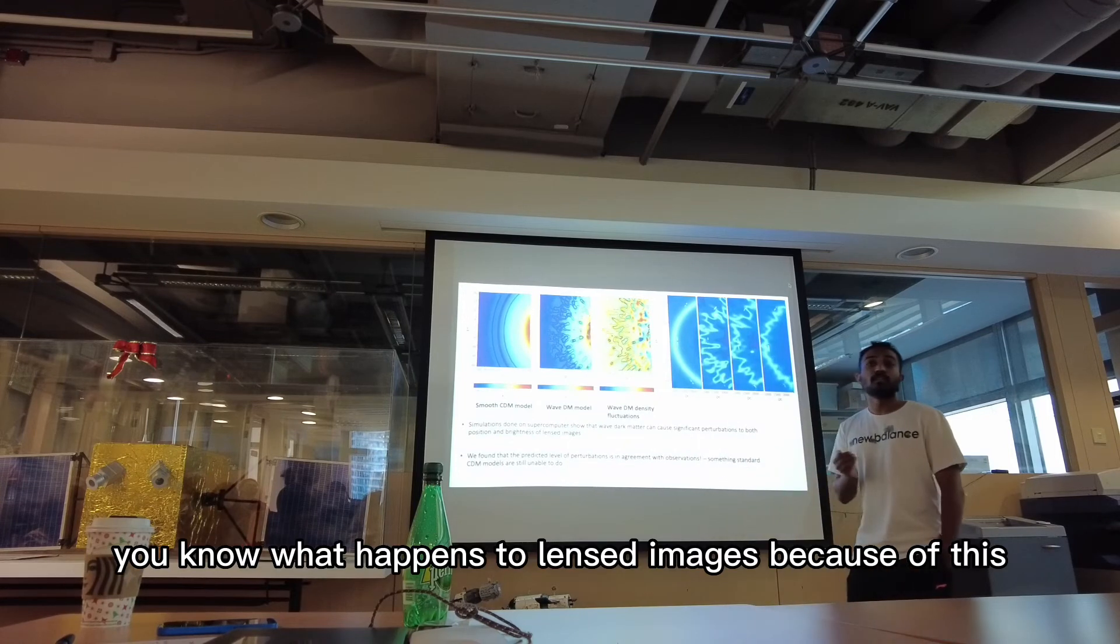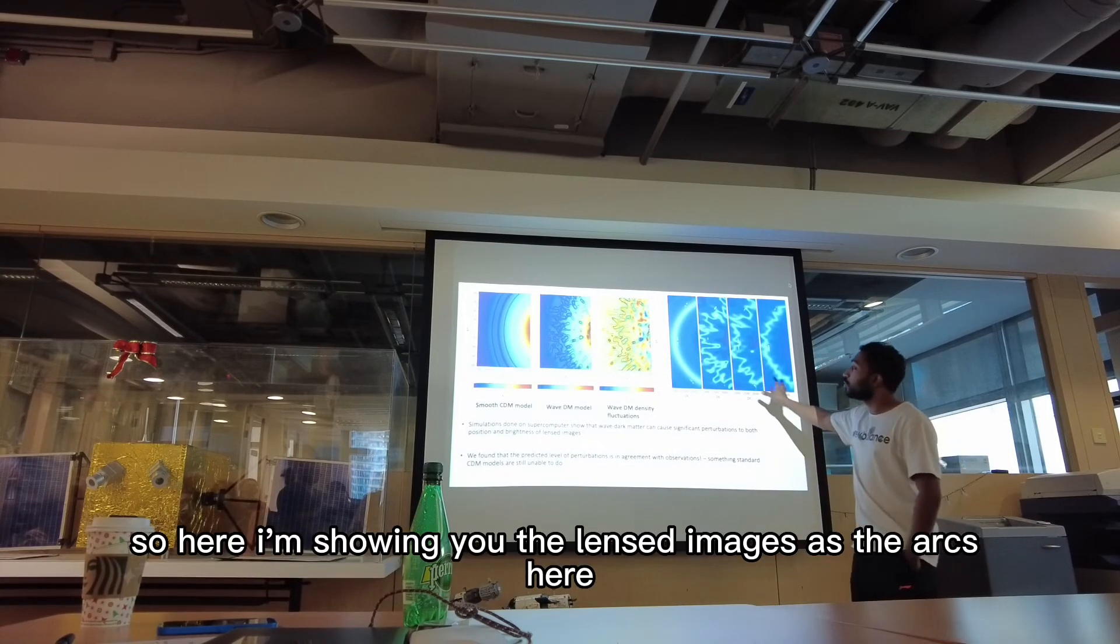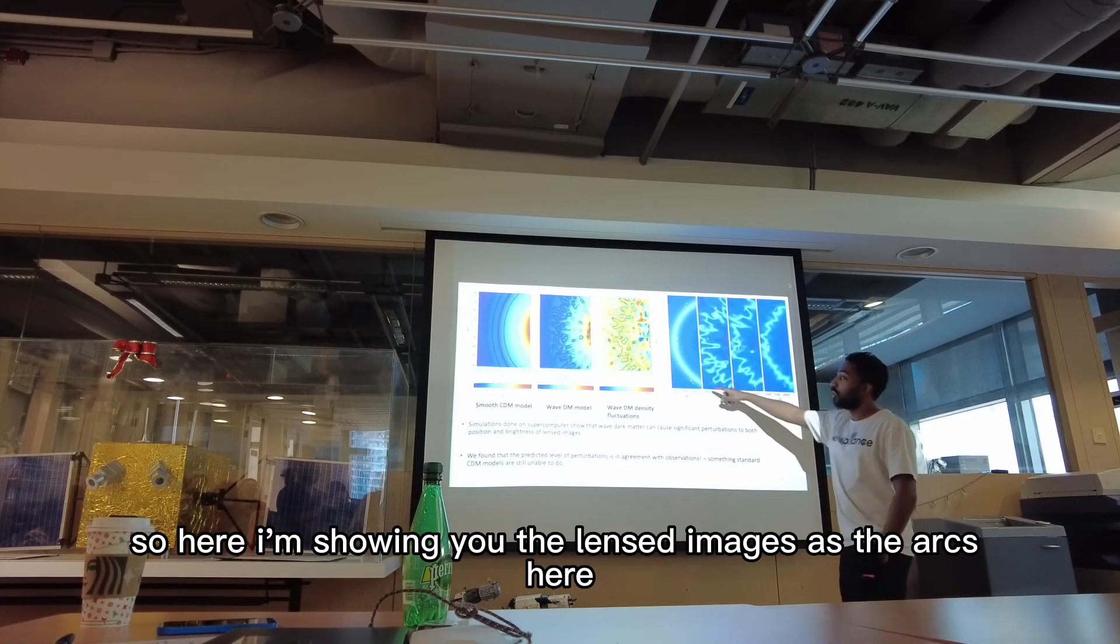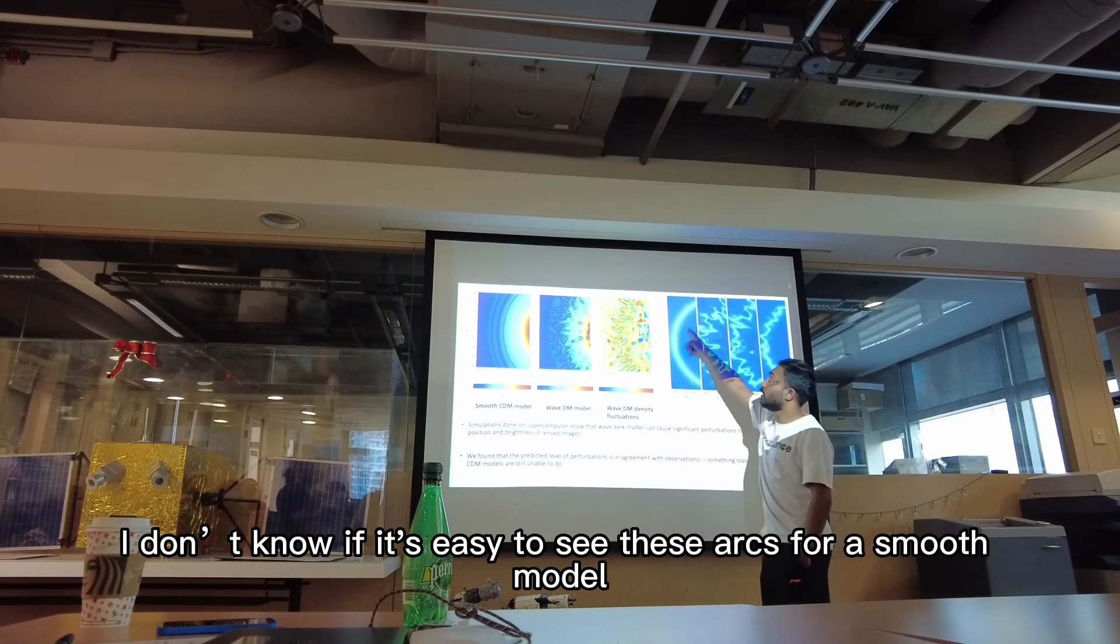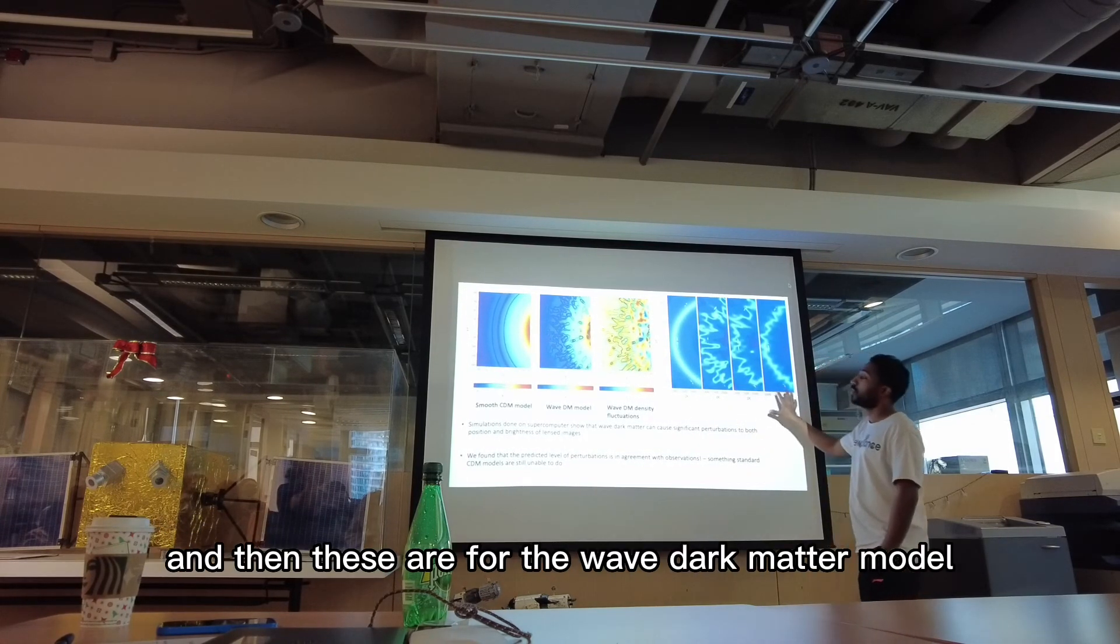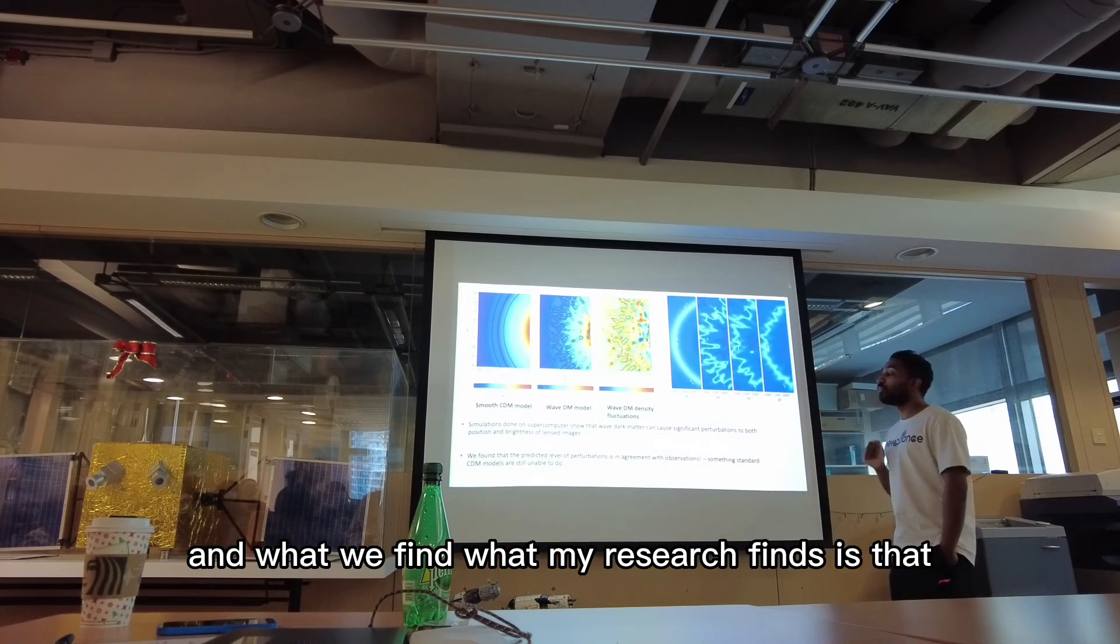So what? What happens to lens images because of this? So up here I'm showing you the lens images as the arcs here. I don't know if it's easy to see. These are arcs for a smooth model, and then these are for the wave dark matter model.